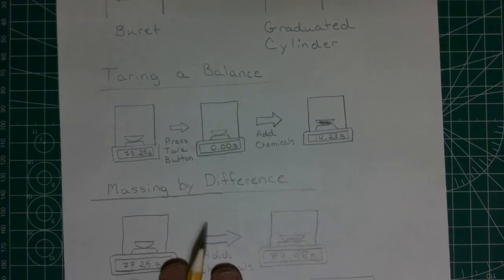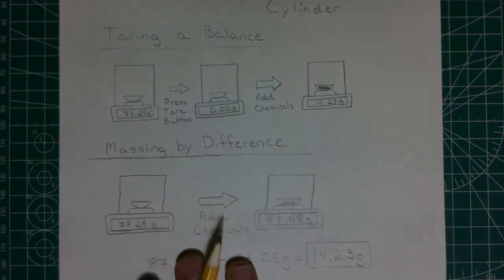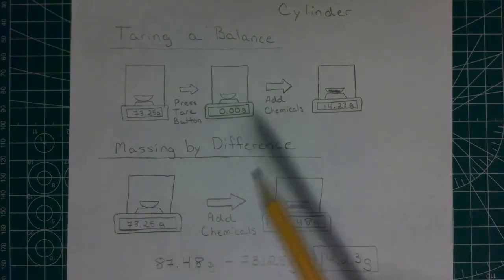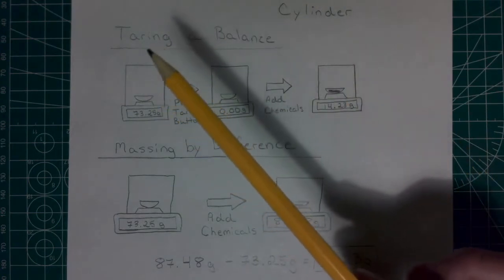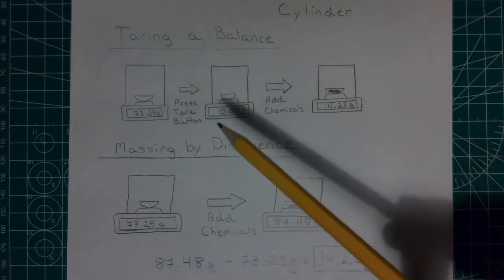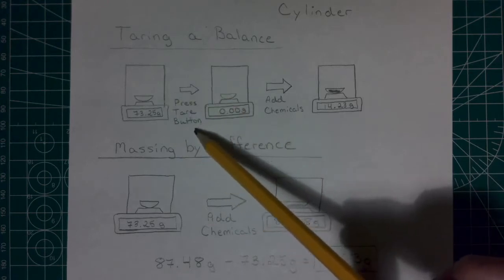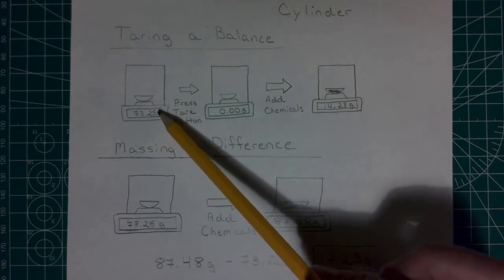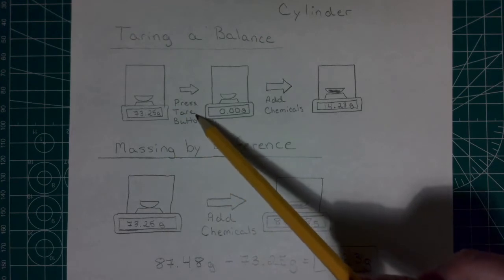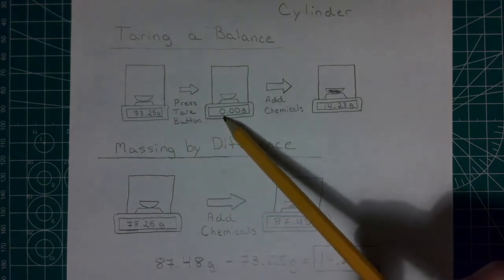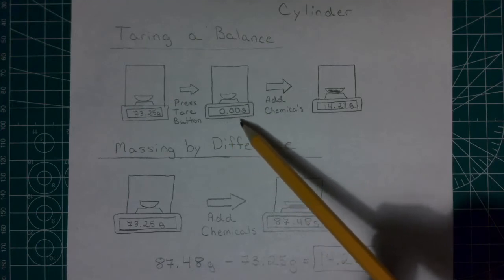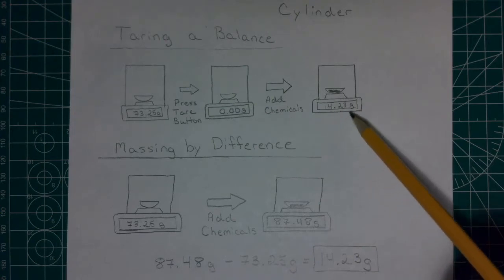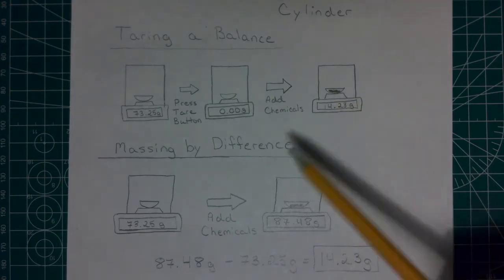The next thing we're going to do is take a look at some balances and determine some masses, and I wanted to explain the two different techniques for doing this. One technique is what they call tearing a balance, and this is a feature that's on a lot of electronic balances that you're going to see now, where I can put a container on the little pan. It's going to have some mass associated with it, and then I just push a button that says tare on there, and what it does is it zeroes that out, so this is now zero grams. And now what I can do is I can add my chemicals, and the values will go back up, and I will get the mass of my chemicals.